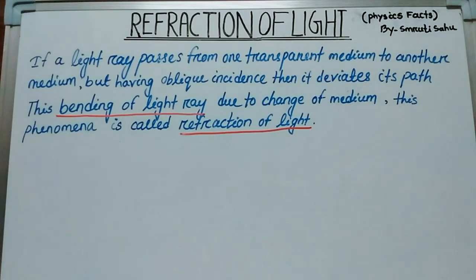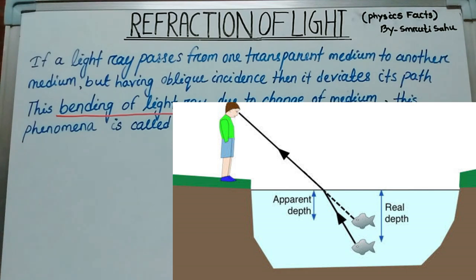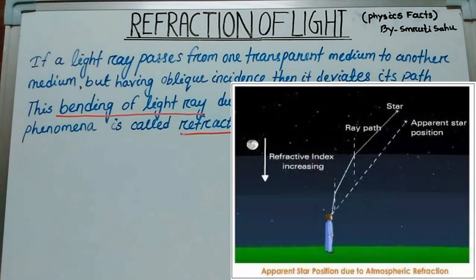Now go to picture 4. If a coin is immersed in water, or a fish is inside a pond, it appears as though the object is nearer to us. But actually, they are placed at a certain distance from their apparent position, or a certain distance from us.